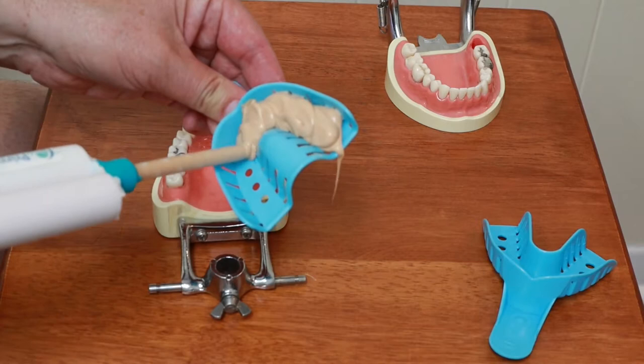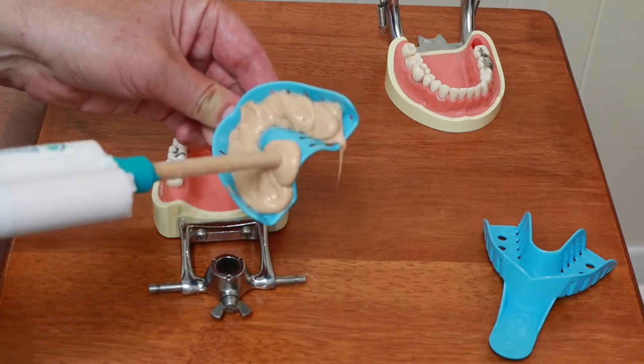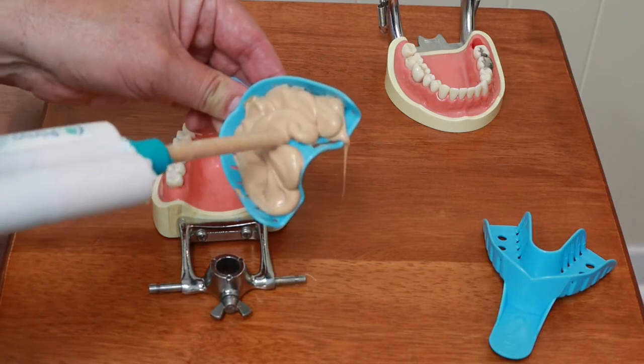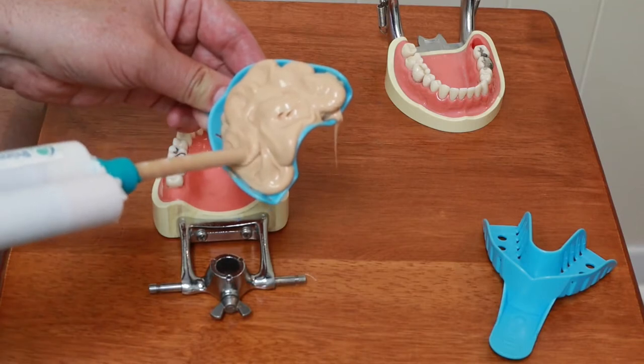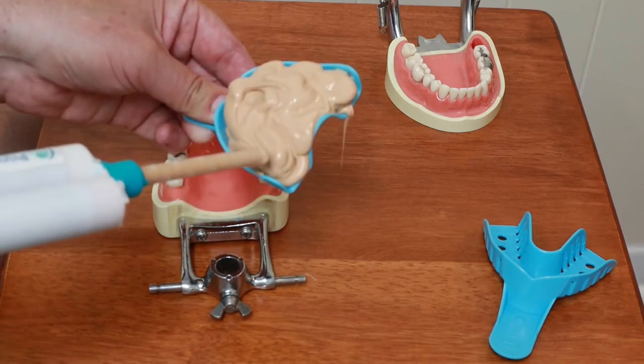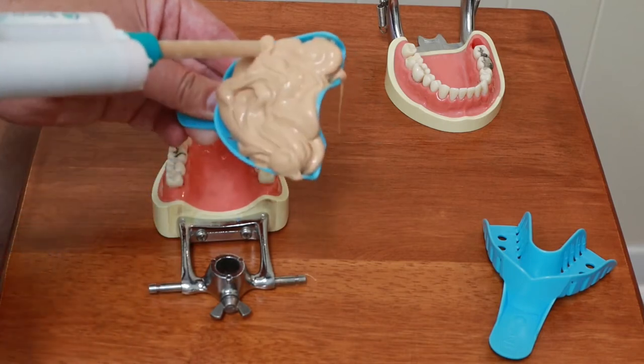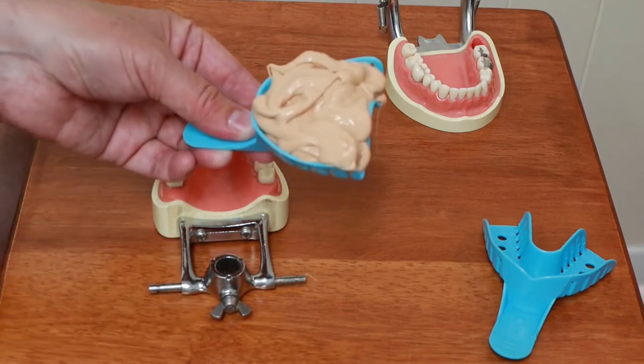Almost like I'm caulking. Years ago we had to mix this by hand. It came in tubes and mix it up on a piece of plastic paper with a spatula and then put it in the tray. Now with the guns it's much simpler. A few more years and we're just going to be using digital scanners most likely.